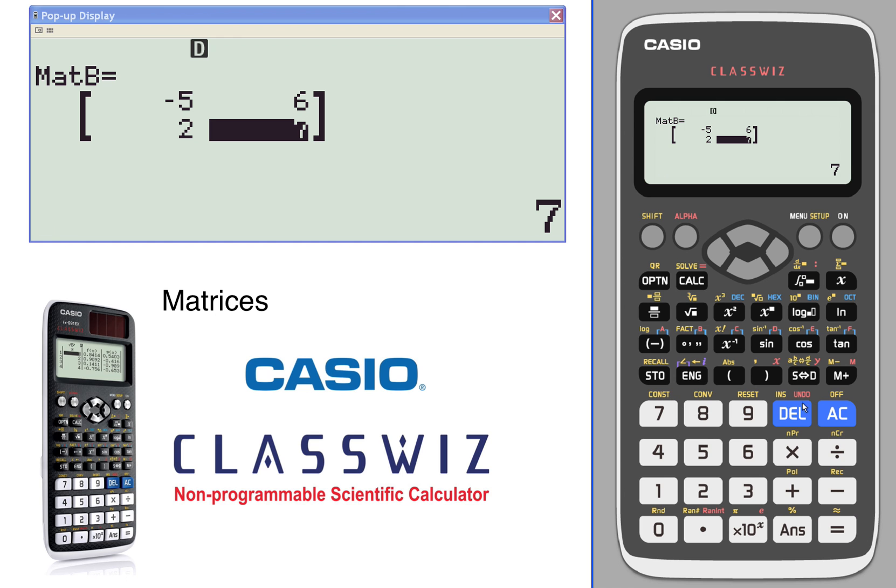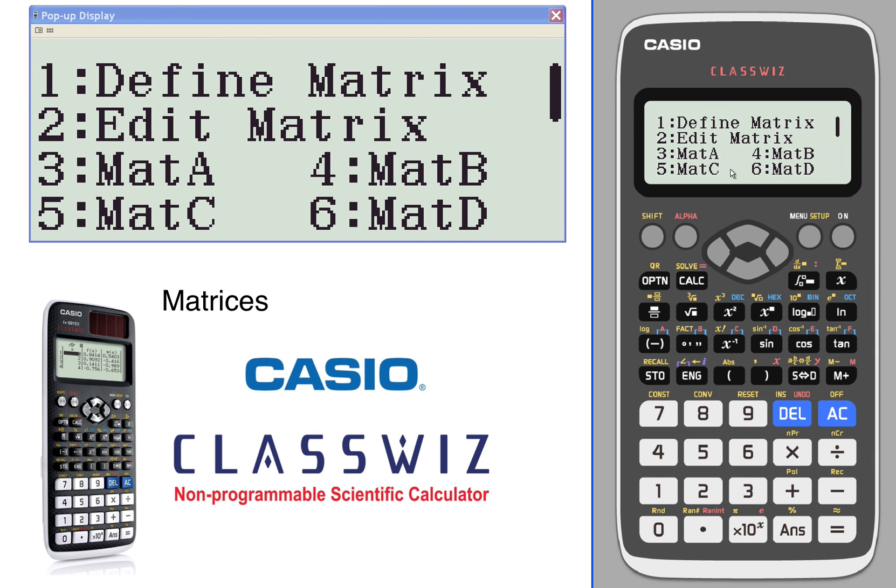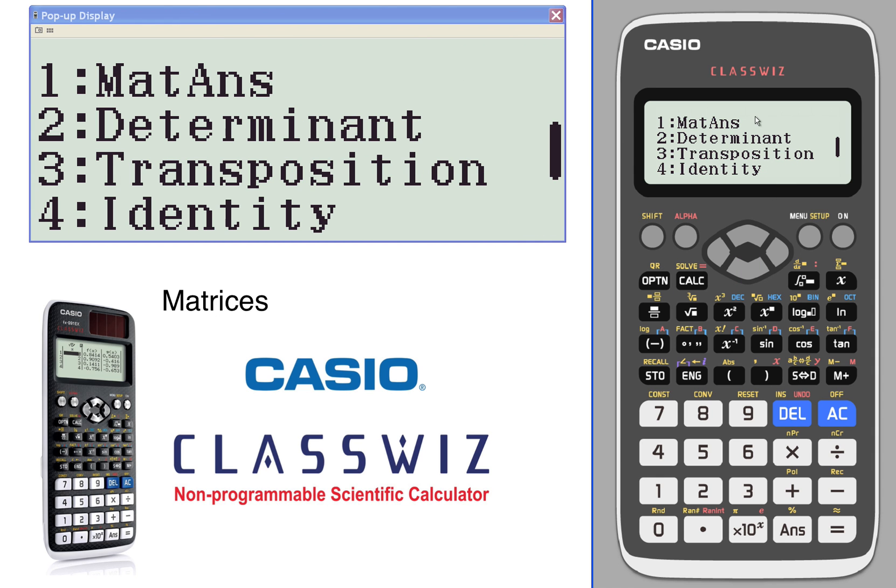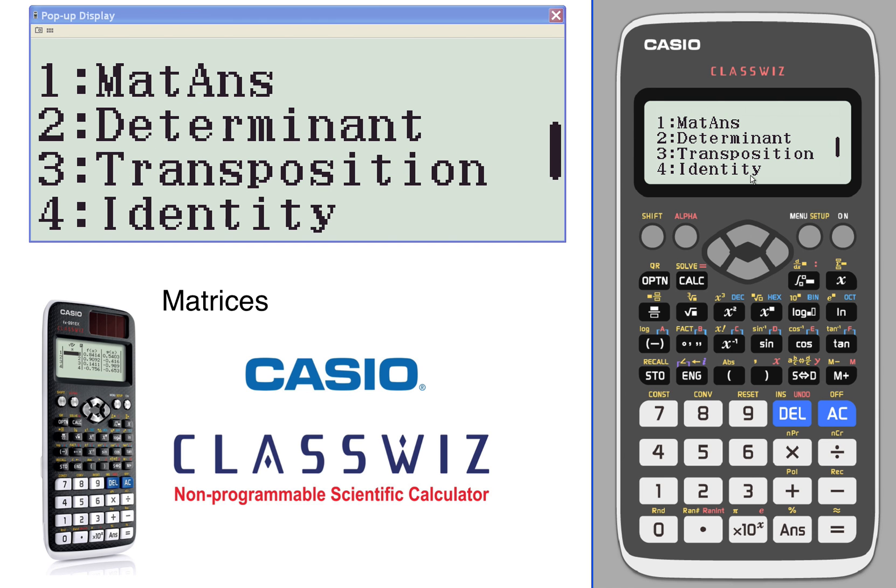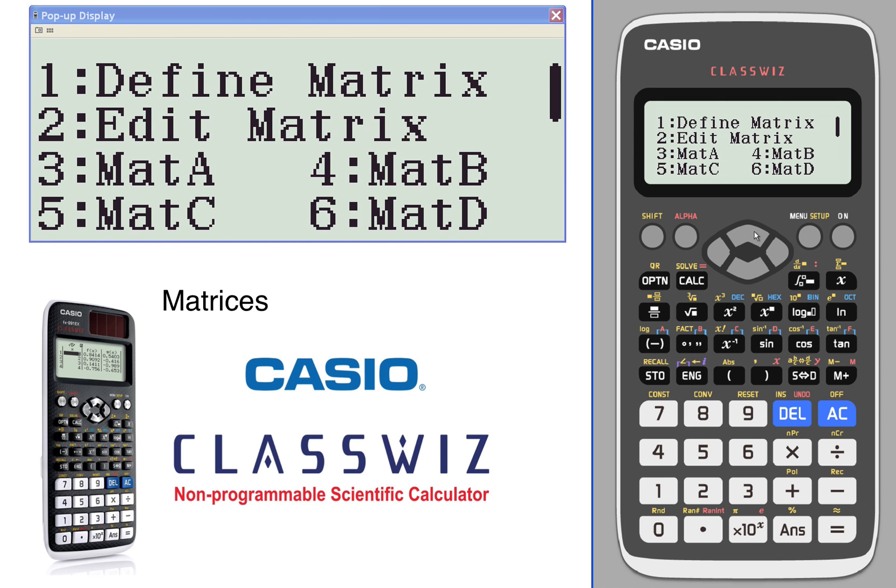We're still in the matrix menu, so let's take a look at the options we've got. We've got matrix answer, the determinant, transposing matrices, finding the identity matrix, and there's our friends the constants.